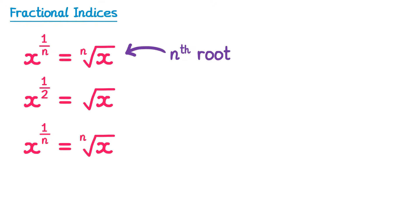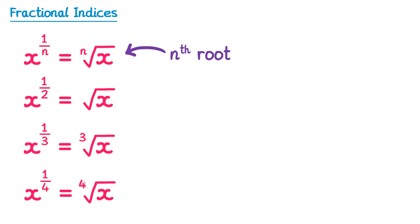If n is 3, so the power is 1 third, then we're looking for the third root of x. We don't call this the third root, but we do write the 3 — we call it the cube root. So we're looking for the number you multiply by itself 3 times to get x. This keeps going: x to the power 1 over 4 is the fourth root of x, x to the 1 over 5 is the fifth root of x, and so on.